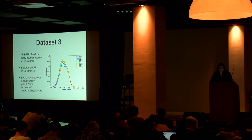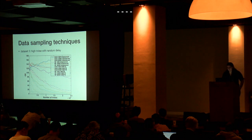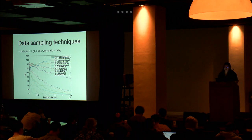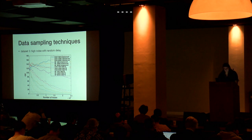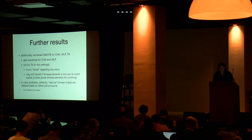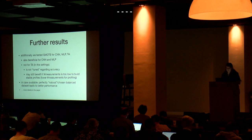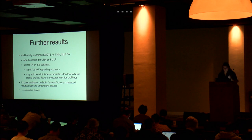The third dataset uses a random delay countermeasure, introducing much more noise with overlapping Gaussian-like distributions. Again, adding artificial samples with SMOTE improved results significantly. The key insight is: it is more effective to stop collecting measurements earlier and apply a balancing technique than to keep collecting more measurements while remaining in an imbalanced scenario. Results for CNN, MLP, and template attack are also in the paper. Of course, if you can collect perfectly balanced real measurements, that is better than artificially adding samples.